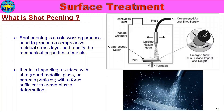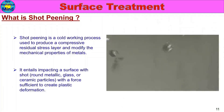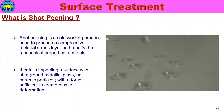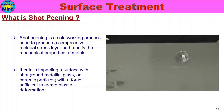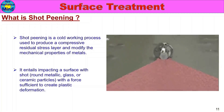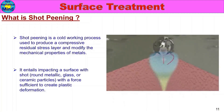In this process, round metallic, glass, or ceramic particles are sprayed on the surface at high velocity, and the surface is impacted. Then the surface is modified. This is shot peening. The round particles create deformation — plastic deformation on the top surface — forming a compressive residual stress layer and improving mechanical properties. This is the shot peening process.